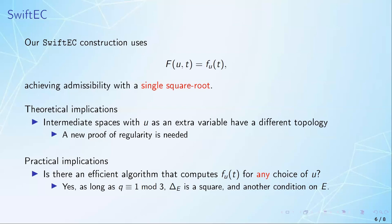We show that this is in fact still possible, as long as the size of the field is 1 mod 3, the curve discriminant is a square, plus one other condition that depends on the curve.